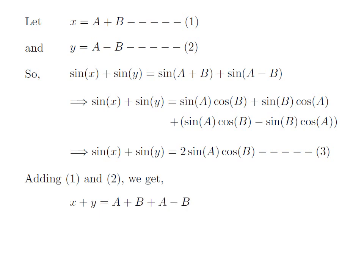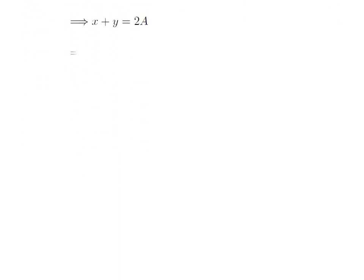Now let's find the values of a and b in terms of x and y. First, add equation 1 and equation 2. We get x plus y equals a plus b plus a minus b. The b terms cancel, leaving x plus y equals 2a, so a equals x plus y divided by 2.